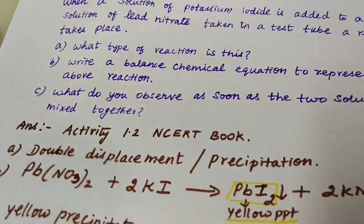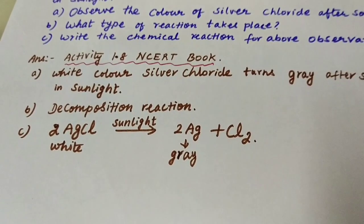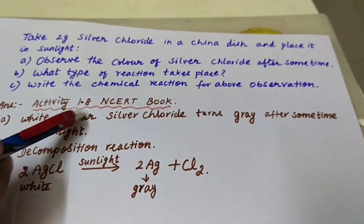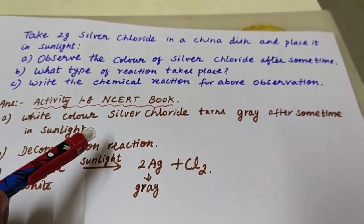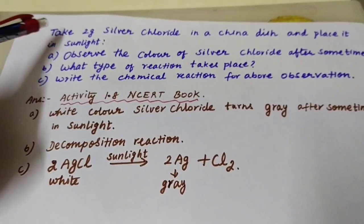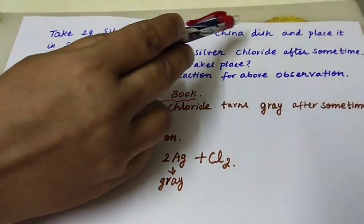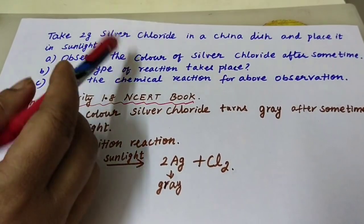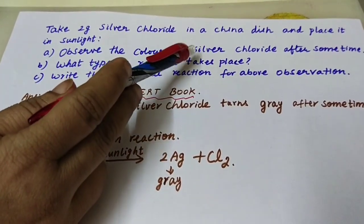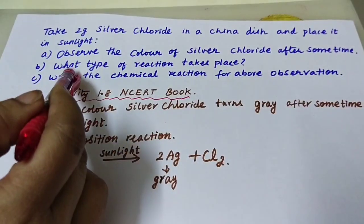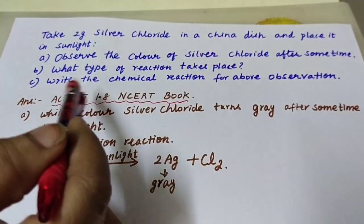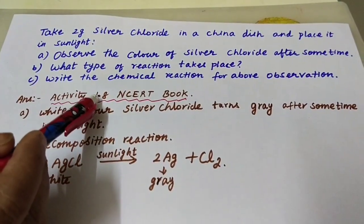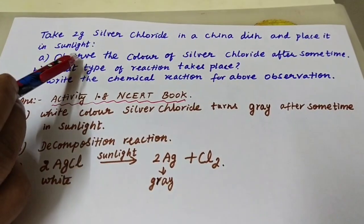Now Activity 1.8 from NCERT: take 2 grams of silver chloride in a china dish and place it in sunlight. The question asks: what do you observe, what type of reaction takes place, and write the chemical reaction for the above observation.